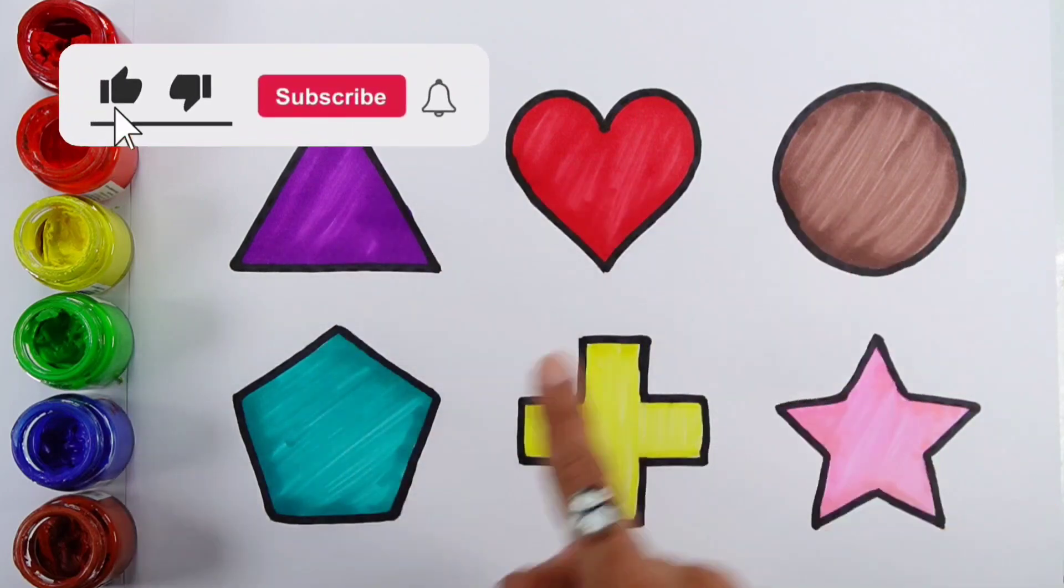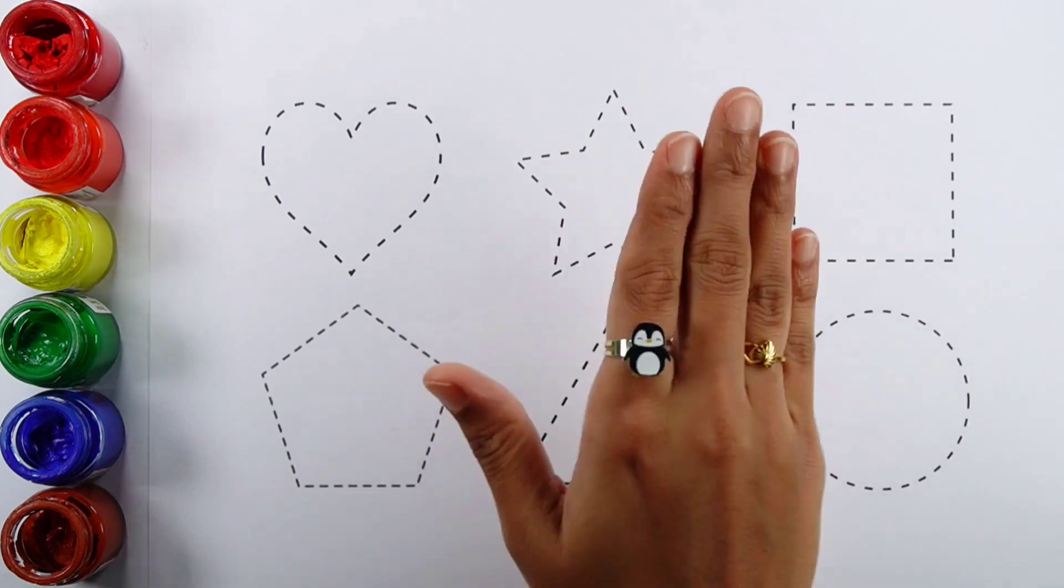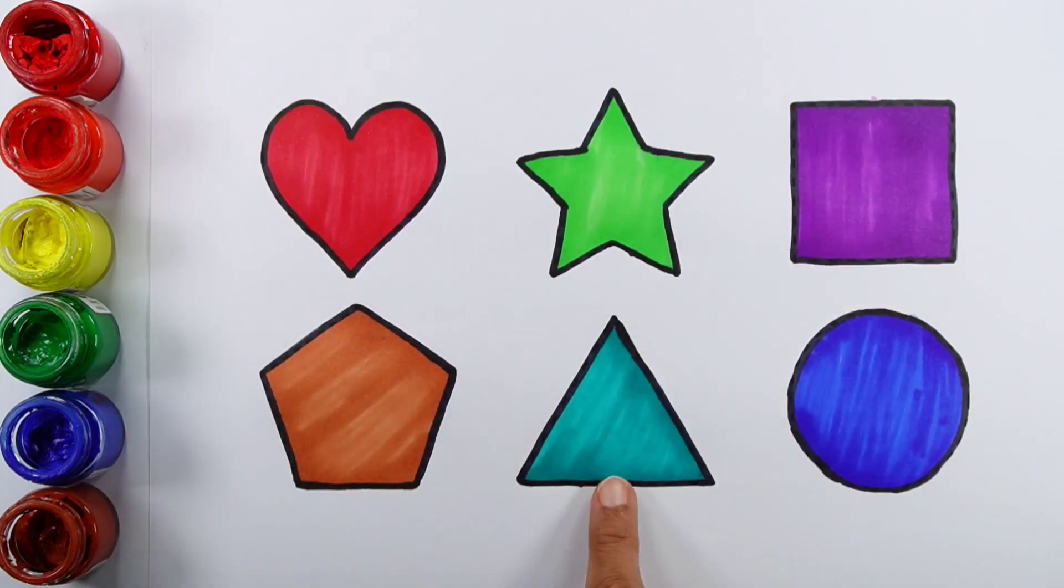Triangle, heart, circle, pentagon, cross, star. Heart, star, square, pentagon, triangle, circle.